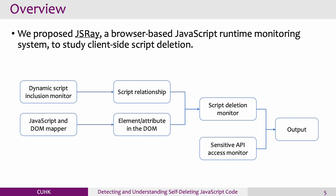We proposed JS3, a browser-based JavaScript runtime monitoring system, to study client-side script deletions. We developed a dynamic script inclusion monitor to construct the script relationship. Then we used the JavaScript and DOM mapper to obtain the element or attribute container of the script. With this information, we can successfully monitor the script deletions on the page.